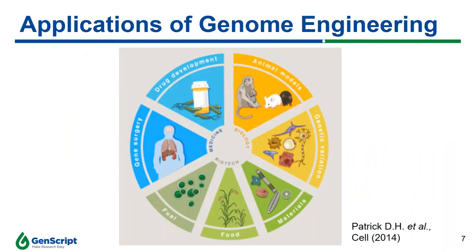With increased understanding of this system, researchers can achieve better genetic and epigenetic control of cells, enabling a broad range of applications — from basic research to biotechnology and medicine. These include altering biological functions in animals, introducing variations into cells, making useful synthetic materials, improving food industries, enhancing crop quality for pathogen resistance, improving metabolic pathways for fuel production, gene surgery, and drug development.